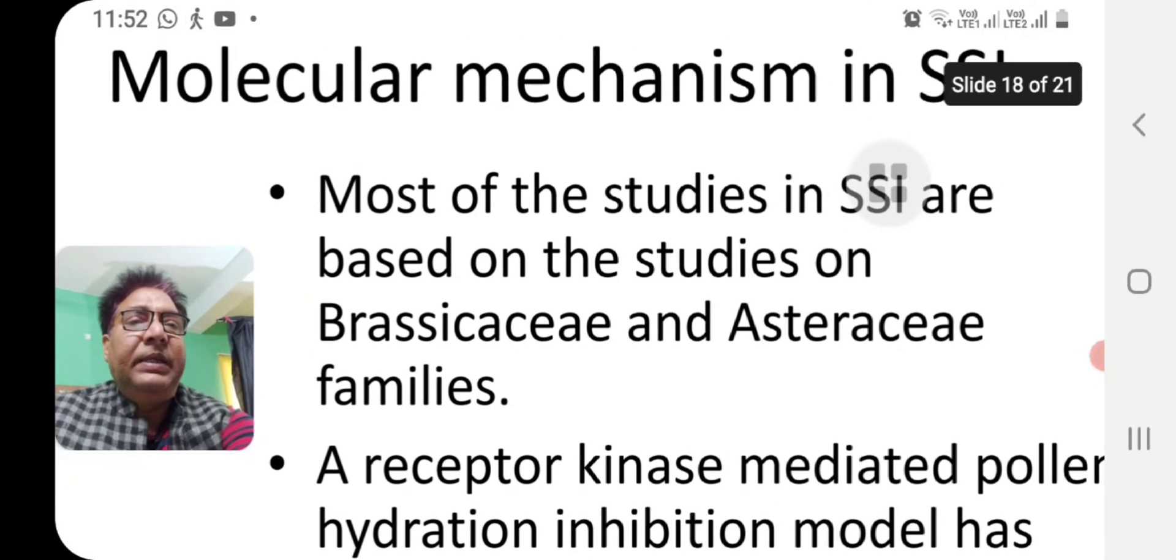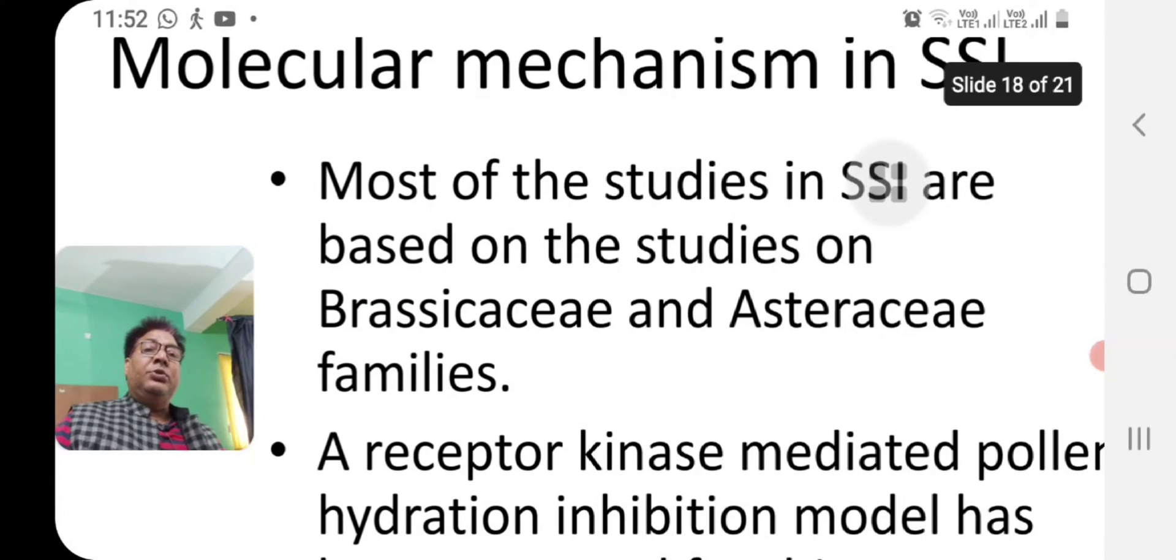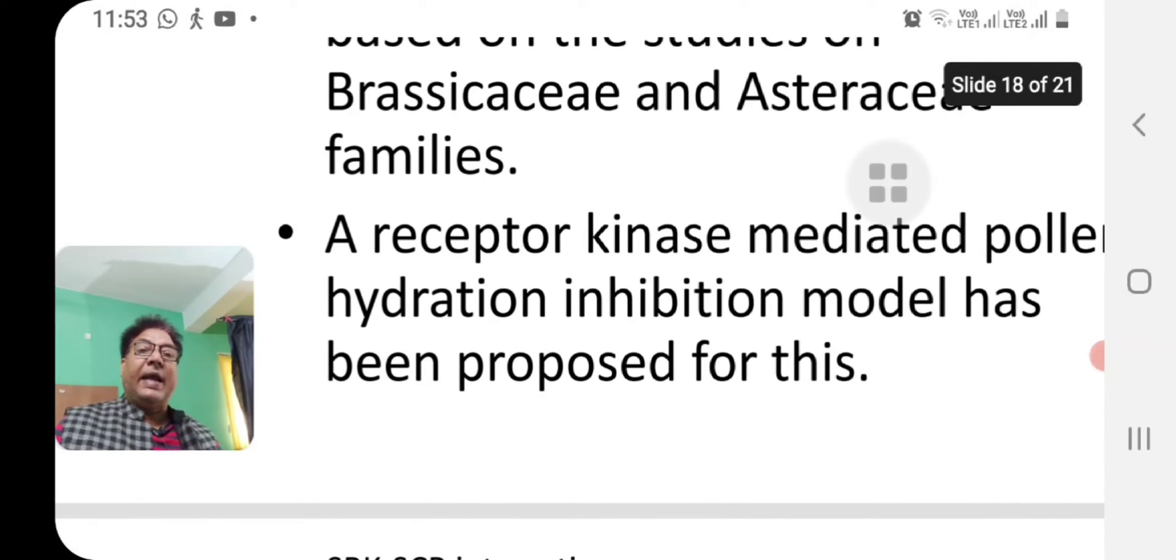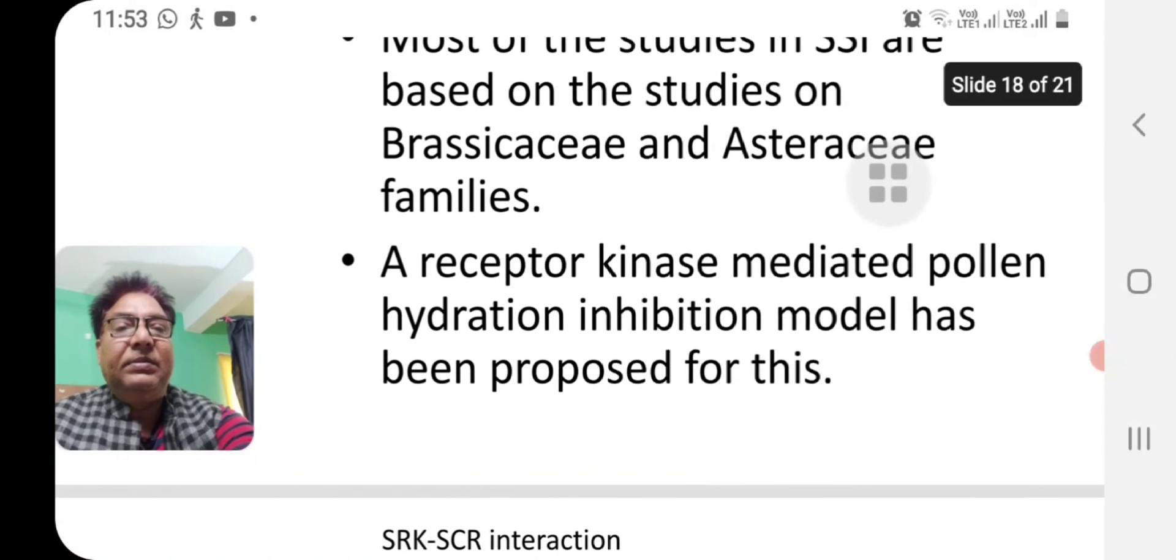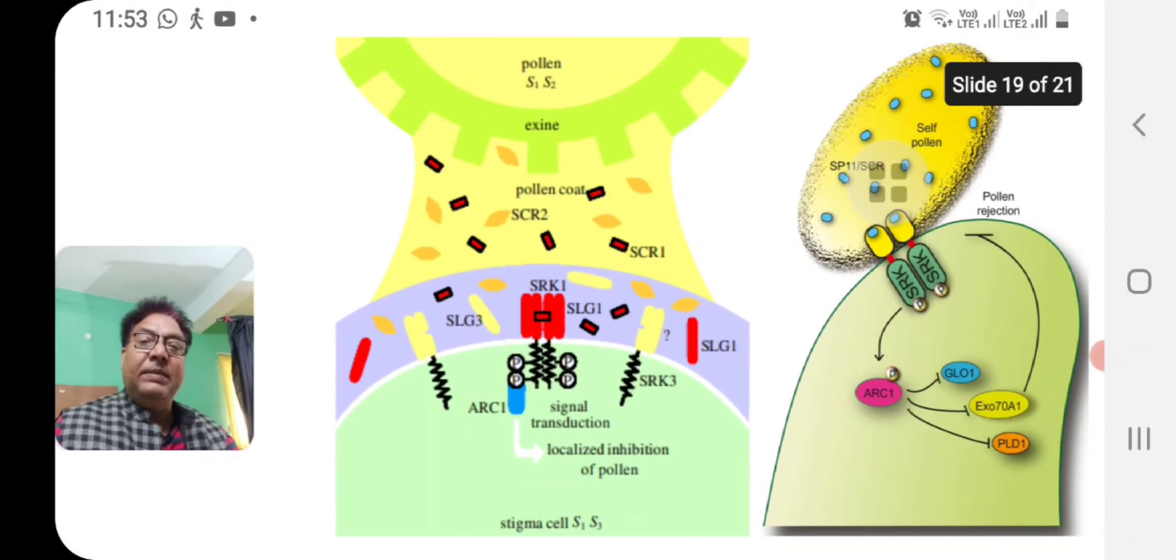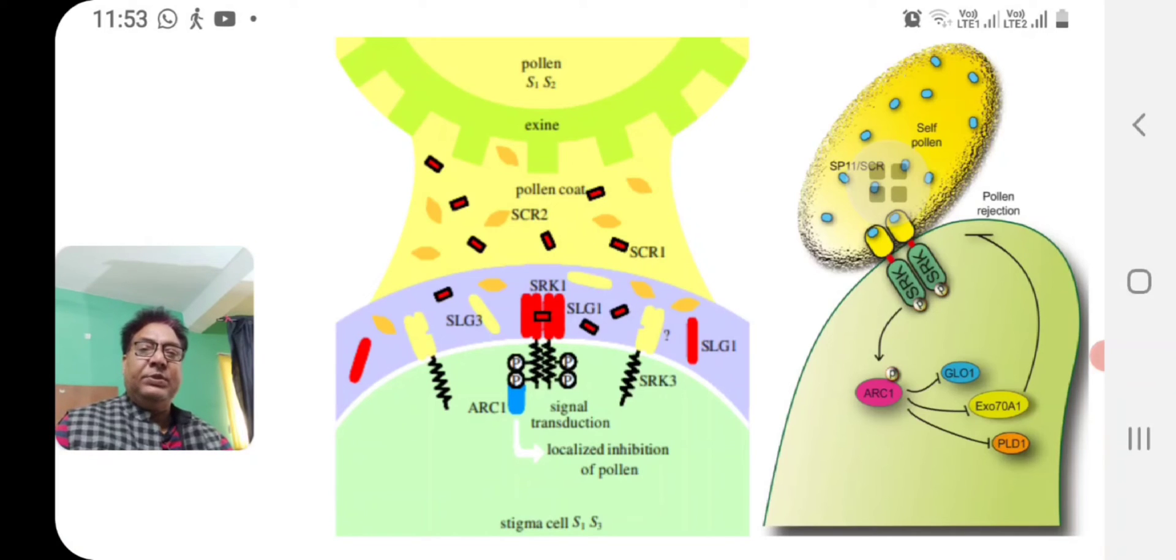Now talking about the molecular mechanism in sporophytic self incompatibility, most of the studies in SSI are based on Brassicaceae and Asteraceae. This is a receptor kinase mediated pollen hydration inhibition process, where there is a receptor kinase called SRK, which is the pistil determinant factor released by the S allele of the pistil. This SRK is allele specific. SRK is a transmembrane protein. There is a single pass transmembrane domain, an extracellular domain, an intracellular domain, and it works in dimeric condition.